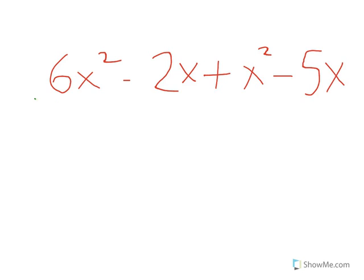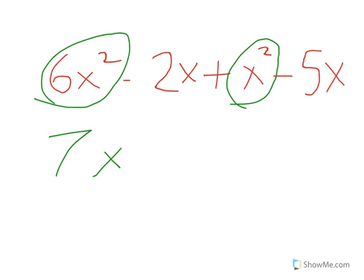Let me do one more: 6x² minus 2x plus x² minus 5x. I can see x² and x². I'll add them: 6 plus 1 is 7x².